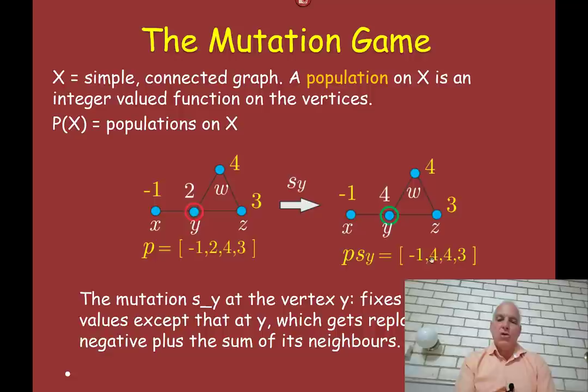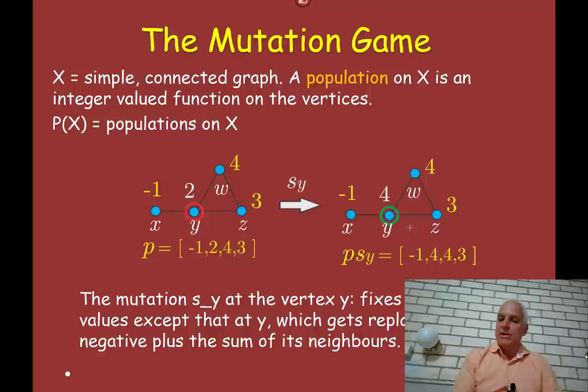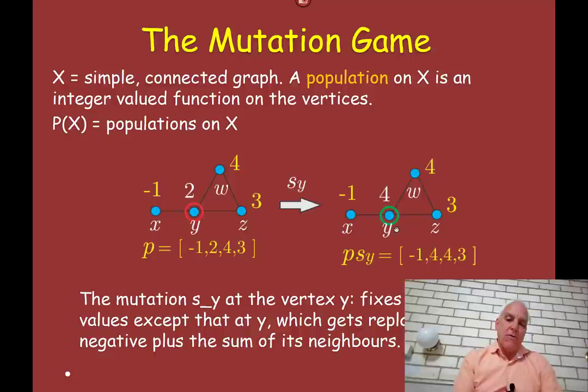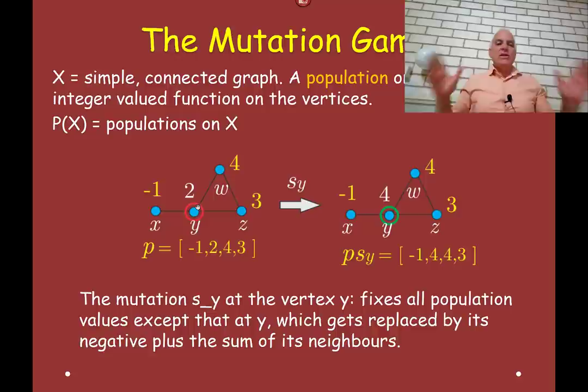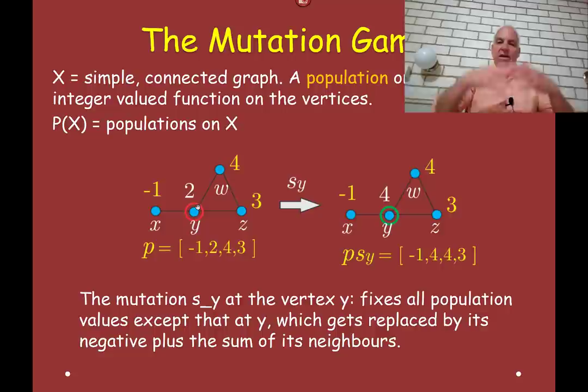So the new population is (−1, 4, 4, 3). An important property: if we mutate again at y, the four turns into minus four, then we add the sum of the neighbors — which is still 6 since they haven't changed — giving minus four plus six equals two. We get back to where we started. It's not hard to convince yourself this will always happen. So mutation at a vertex is an involution — that's the starting point of the mutation game.